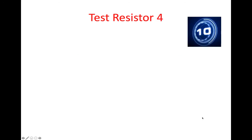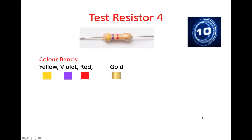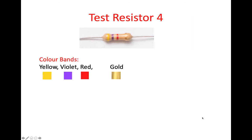Test resistor number four. Here we have yellow, violet, red, and gold. Yellow has a value of 4, which represents the first digit of the resistance value. Violet has the value 7, and that's the second digit of the resistance value.